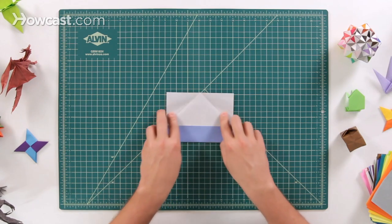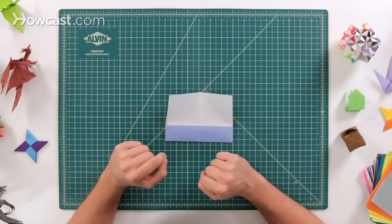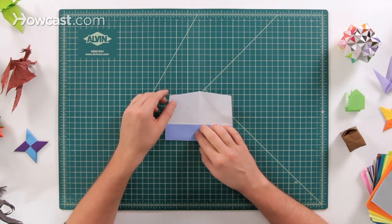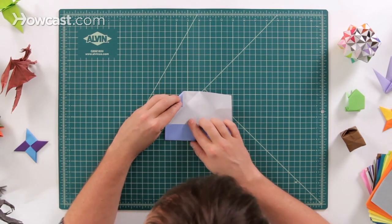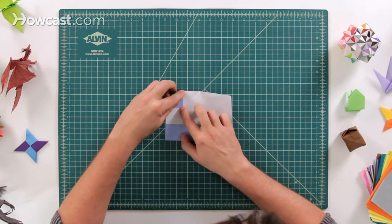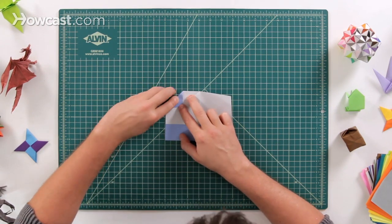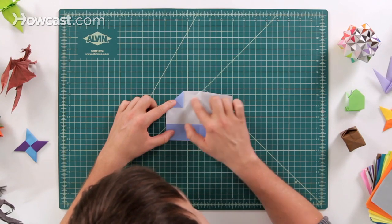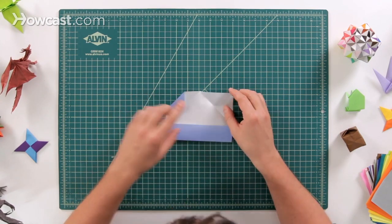Next, open these two flaps up, right like this, and we're going to now fold those two flaps into the middle, just like this. So they're now going to lie right on that line that we created when we folded this down.